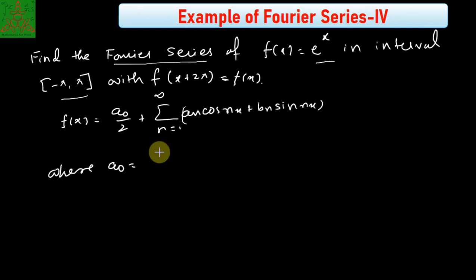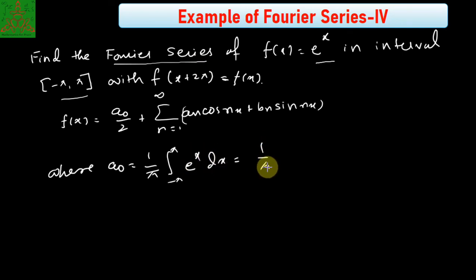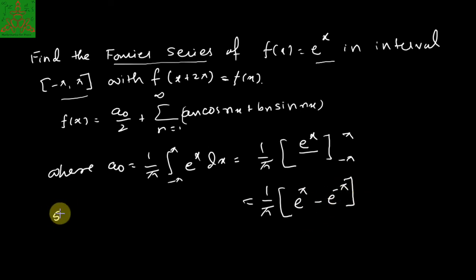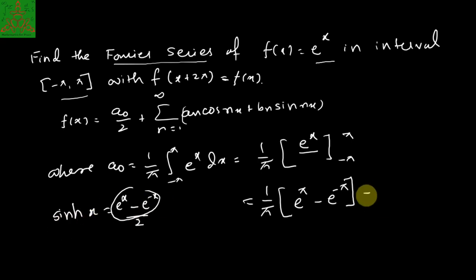Where a₀ is defined as (1/π) times the integral from minus pi to pi of f(x) dx, and f(x) here is e^x. So it is (1/π) times [e^x] from minus pi to pi, giving e^π minus e^(−π). Dividing and multiplying by 2, and using sinh(x) = (e^x − e^(−x))/2, this value is 2·sinh(π)/π. So a₀ equals 2·sinh(π)/π.